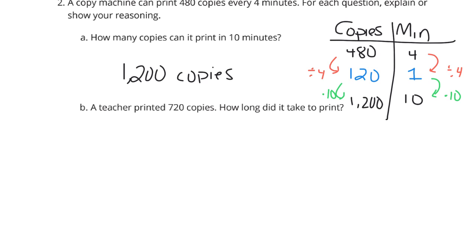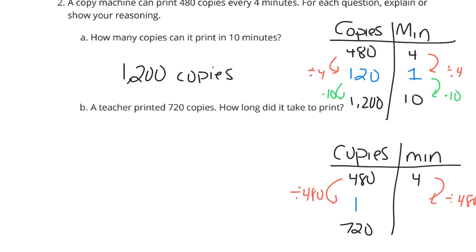Now a teacher printed 720 copies. How long did it take to print? If we start with a table again, with copies and minutes, and we go with our 480 copies in 4 minutes idea. And now we're trying to get to 720 copies. I could figure out how long it takes for one copy. If I divide my 480 by 480, and then I divide my 4 by 480. 4 divided by 480 is a really crazy decimal. Honestly, it is 0.083 repeating.